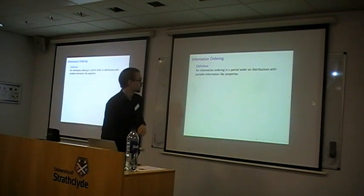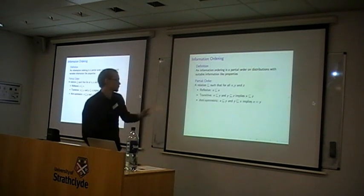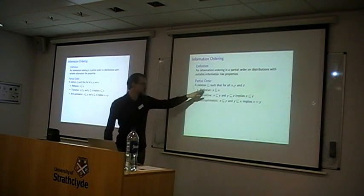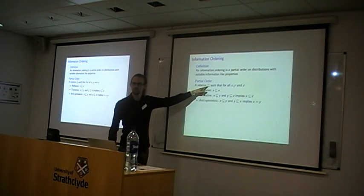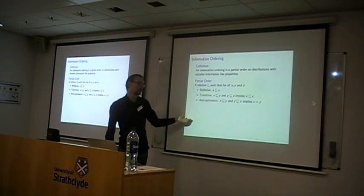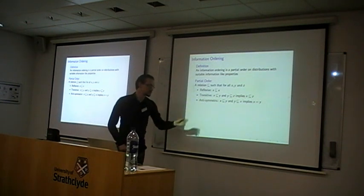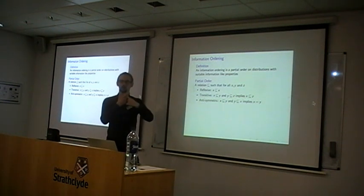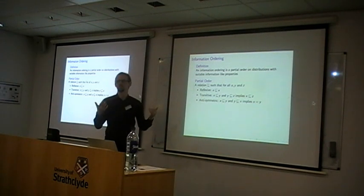I'll be looking at an information ordering, which is just a partial order with suitable information-like properties. A partial order has the following properties: it's reflexive — anything is smaller than itself. If x is smaller than y and y is smaller than z, then x is smaller than z — that's transitivity. And anti-symmetric means the direction only goes one way: you can't have x smaller than y and y smaller than x unless they are equal.